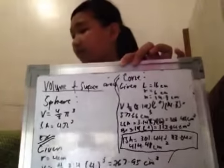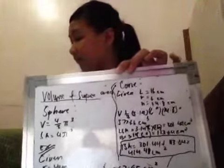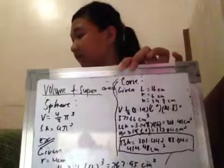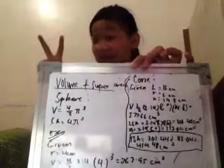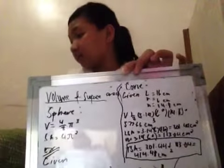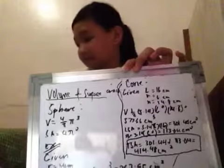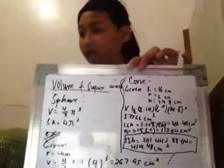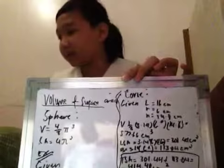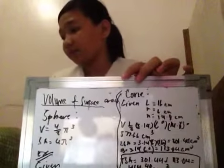Volume is the amount of space occupied by a three-dimensional figure. The surface area, or SA, is the number of square units of the surface. Pwede natin - tapos sa cone naman, ito yung given niya.